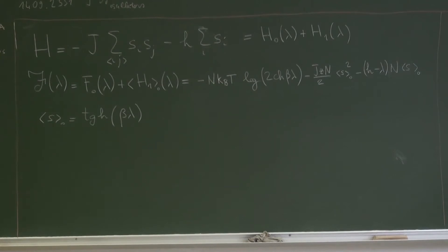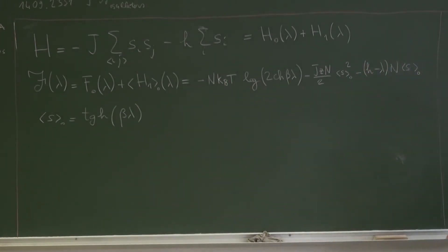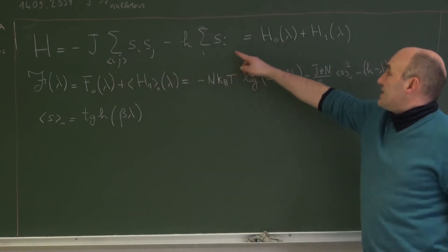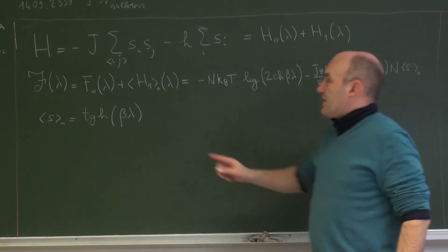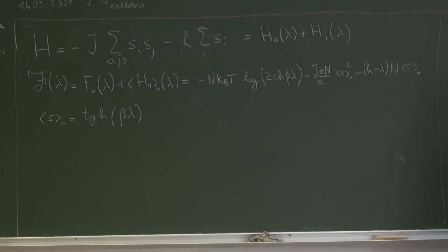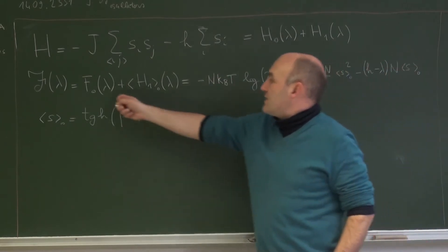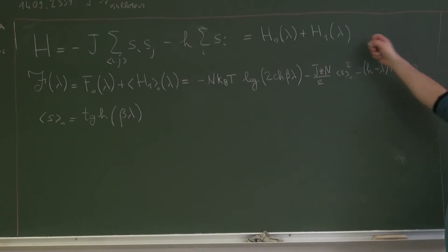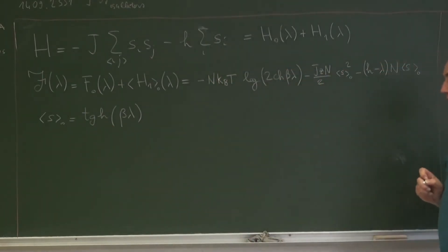This is the second part of our lecture. I recapitulate what we had in the first part. The starting point was the Ising model. We split the Hamiltonian into two terms, and we calculate the variational free energy composed of these two parts. This one is for a system of non-interacting spins, and this is the contribution of the interaction part, where I use the notation S average naught, and we calculated that this was the hyperbolic tangent of βλ.